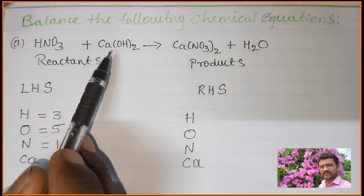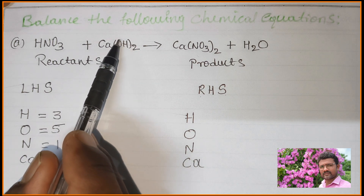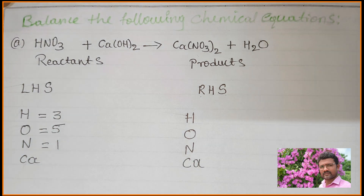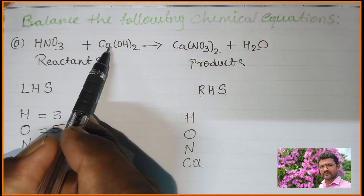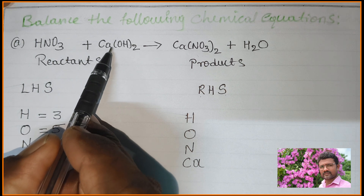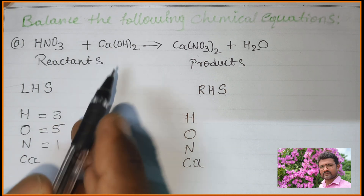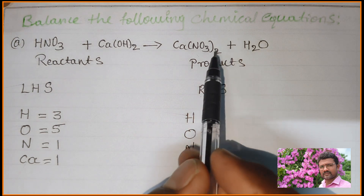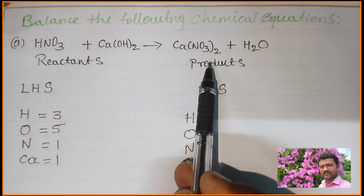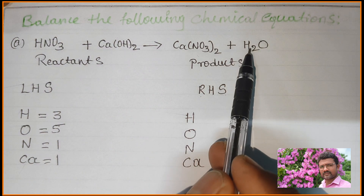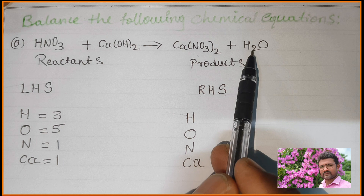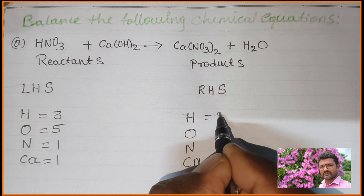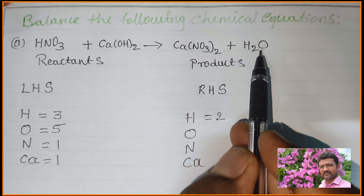You should not multiply the 2 to calcium because the 2 belongs only to the OH group. So calcium atoms on the LHS: 1 calcium. Now on the product side, count hydrogen atoms in H2O: 2 hydrogen atoms.